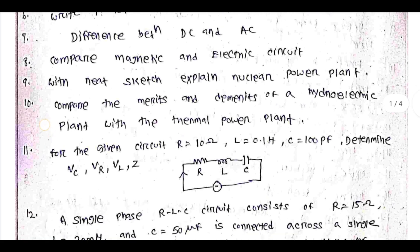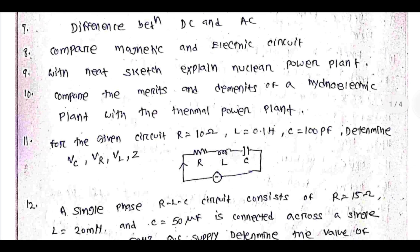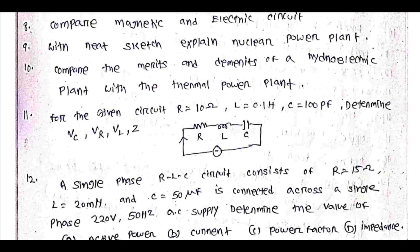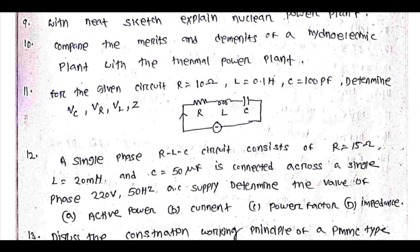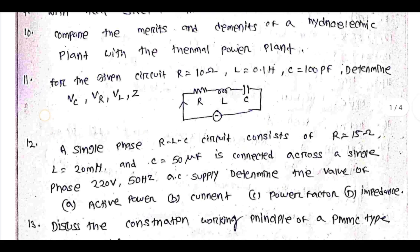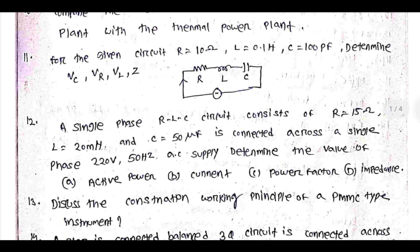Additional long-answer topics: Compare magnetic and electric circuit with neat sketch. Explain nuclear power plant. Compare the merits and demerits of a hydroelectric plant with a thermal power plant. For a given circuit: R = 10 ohm, L = 0.1 henry, C = 100 pF. Determine VC, VR, VL, and Z.